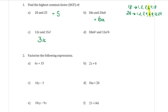Example D: 18AB² and 12A²B. The numbers: 18 and 12 — the highest common factor is 6. Looking at the letters: one has one A and the other has two, so I can only bring out one A as a factor. And for the B's, we have the same situation — one with one B and the other with two — so I can bring out one of each of those letters. The HCF is 6AB.